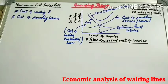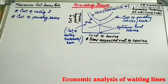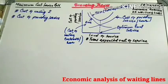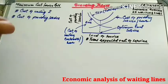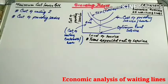Coming to the minimum cost service rate, each queuing system is associated with two opposing costs. The first is the cost of waiting. When you go to a barbershop, bank, or somewhere else and have to stand in a long queue, you feel disturbed and will try to avoid that particular place, moving to another shop or public place.